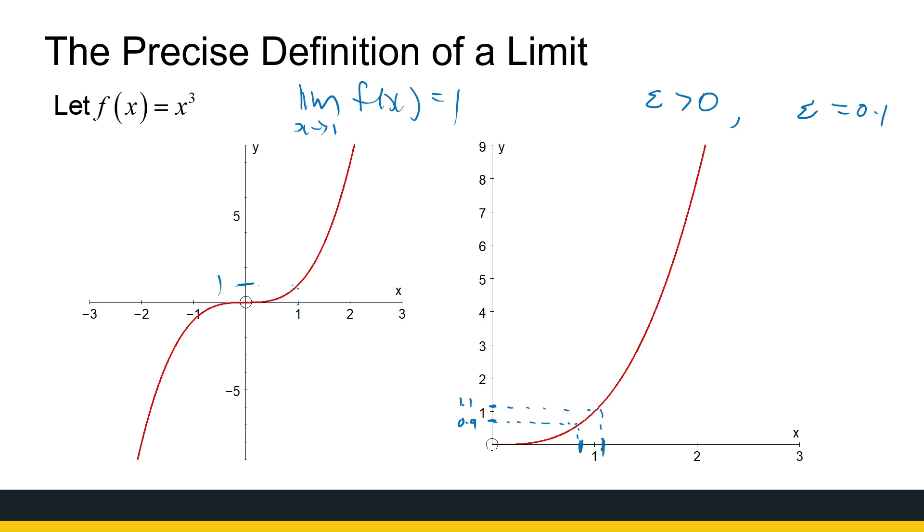What you need to notice is the delta values - these aren't very accurate - the delta values are not going to be the same. Because my function is x cubed. If I want the x values for those exact y values, it's going to be approximately 0.96548. This one is going to be 1.0332. They are not the same distance away from 1.